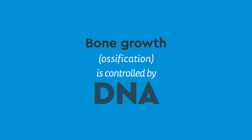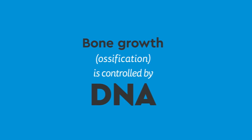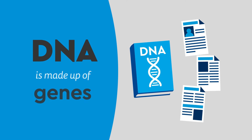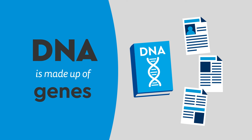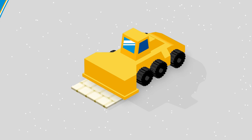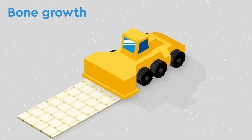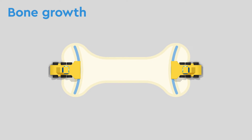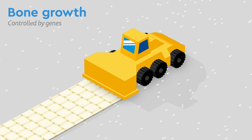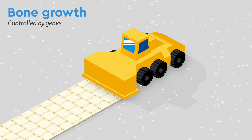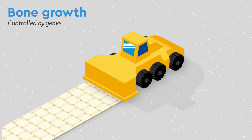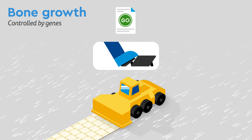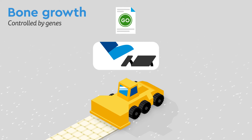Bone growth is controlled by our DNA. DNA is our body's instruction manual, and individual instructions are called genes. You can think of bone growth as a paving truck, slowly laying down new bone. Each part of the truck is controlled by different genes — some make the truck speed up by pressing on the gas pedal, and others slow it down by putting on the brakes.